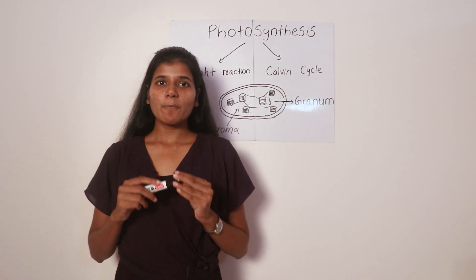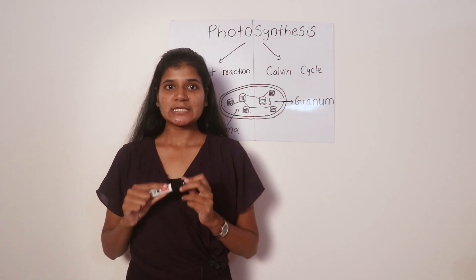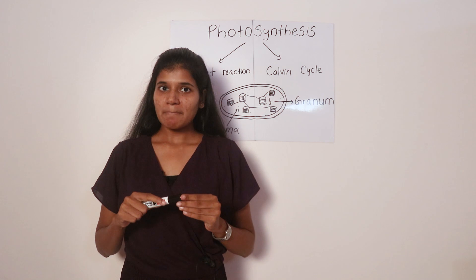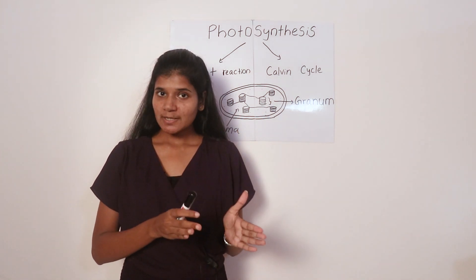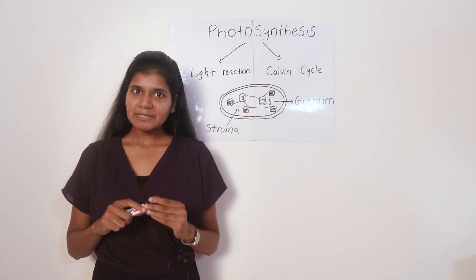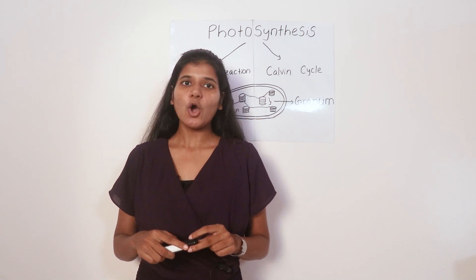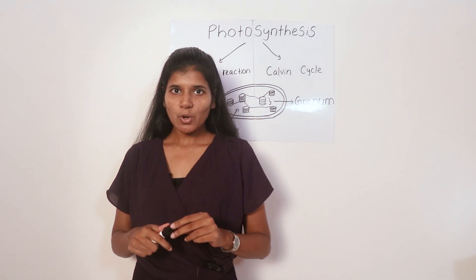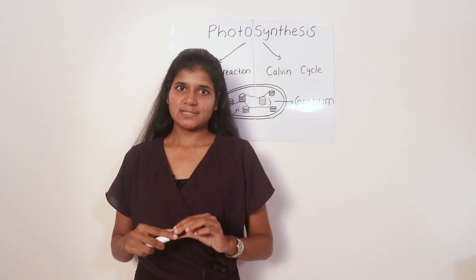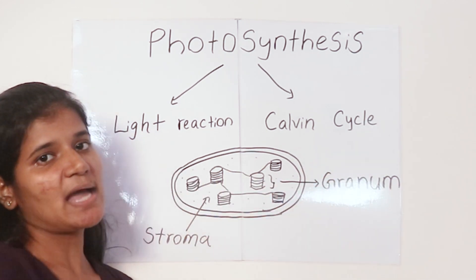The first thing you need to know about photosynthesis is the definition. Photosynthesis is the metabolic process by which light energy is trapped and converted into chemical energy. This chemical energy is stored in carbohydrates, proteins, fats and oils. Now we'll take a look at the two stages of photosynthesis: light reaction and the Calvin cycle.